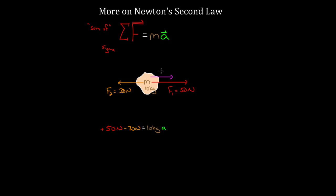If I had more forces, it'd be just as easy. Say there's another force of 25 Newtons to the right — F3 — and another force of 40 Newtons to the left — F4. I can just keep including these, adding them up as vectors. The 40 Newtons points left, so that's negative 40 Newtons. The 25 points right, so that's positive 25 Newtons. Adding them all up gives me the net force, which lets me find the acceleration.